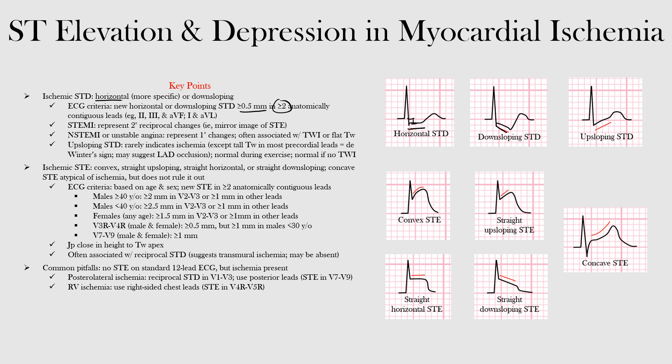Ischemic ST depression can occur in STEMI, NSTEMI, and unstable angina pectoris. However, its clinical significance differs significantly. In NSTEMI or unstable angina, ST depression represents primary ischemic changes, often associated with T wave inversion or flattening. In STEMI, ST depression is a secondary ischemic change — the primary change is ST elevation. ST depression in STEMI represents reciprocal or mirror changes to the elevated ST segment.